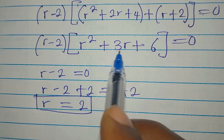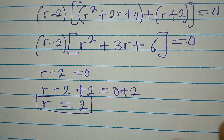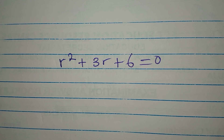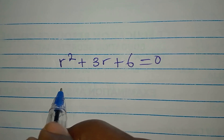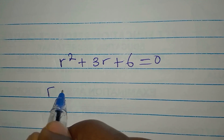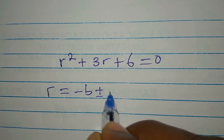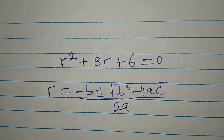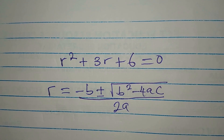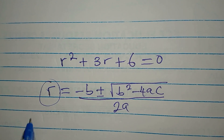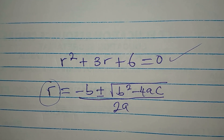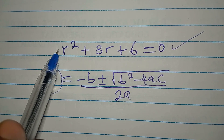If we look at r squared plus 3r plus 6, equating it to zero gives us a quadratic equation. Our formula for the quadratic equation is r equals minus b plus or minus square root of b squared minus 4ac, all over 2a. Note that it doesn't always have to be x — it depends on the variable in the equation. Here the unknown variable is r. Our a is 1, b is 3, and c is 6.